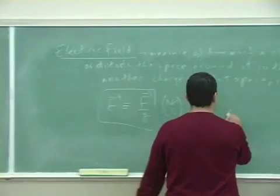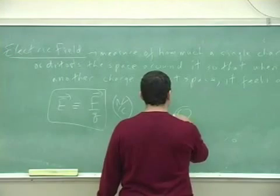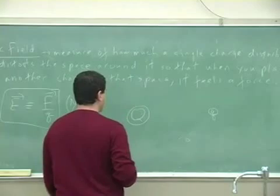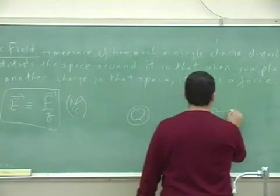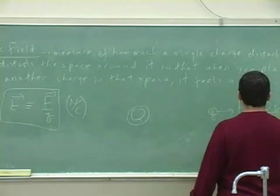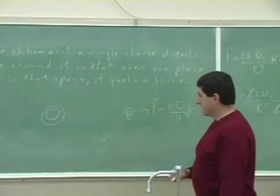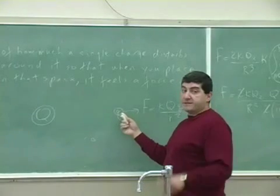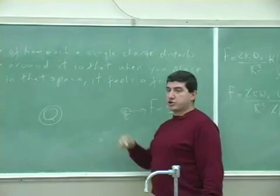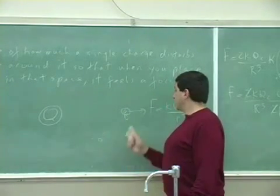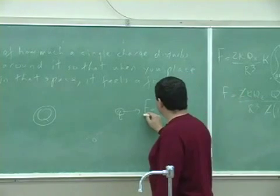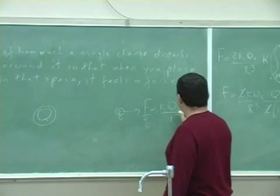So in other words, if you have a charge here, Q, and then you have another charge, little q, this one exerts a force on that. And the force is equal to kQq over r squared. Now, if I want to find the electric field created at that spot by that charge, big Q, I divide the force between them by the little q.